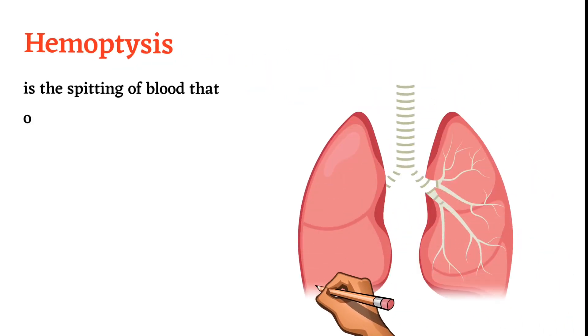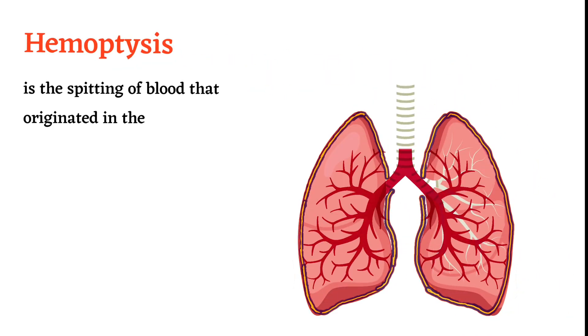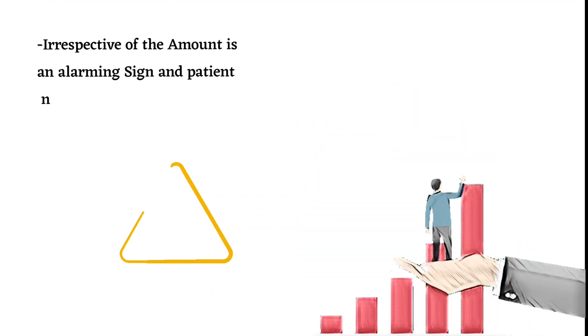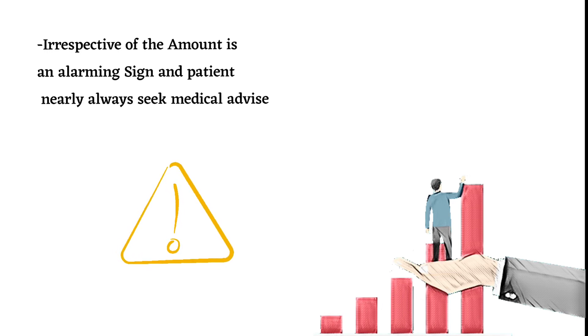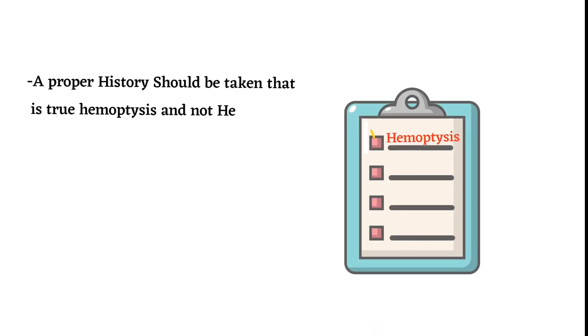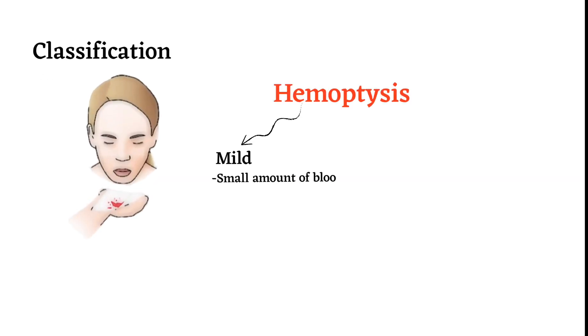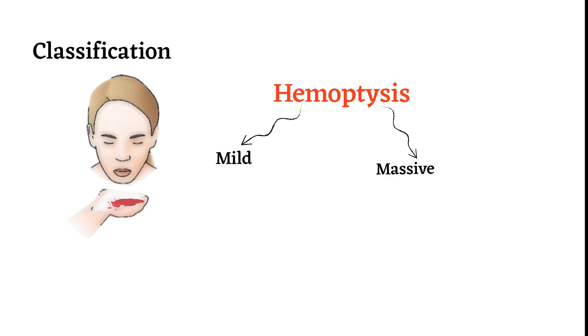Hemoptysis is the spitting of blood that originates in the lungs or bronchial tubes. Irrespective of the amount, it is an alarming sign and patients nearly always seek medical advice. A proper history should be taken to confirm true hemoptysis and not hematemesis or nose bleeding. In mild hemoptysis there is a small amount of blood or sputum streaked with blood that disappears on its own. Massive hemoptysis is when there is so much blood that it interrupts breathing.